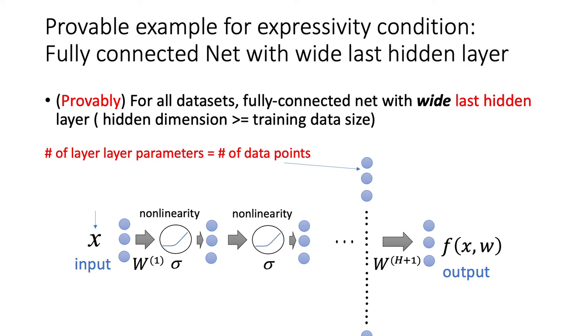What are examples of expressivity condition? Our first example that we are able to prove is a fully connected net with a wide last hidden layer. Mathematically, we are able to show that for all datasets, a fully connected net with a wide last hidden layer satisfies expressivity condition if the hidden layer dimension is bigger than or equal to the training dataset size. We need all the other hidden layers to be as wide as the input dimension, but we need the last hidden layer to be as wide as the training dataset dimension.